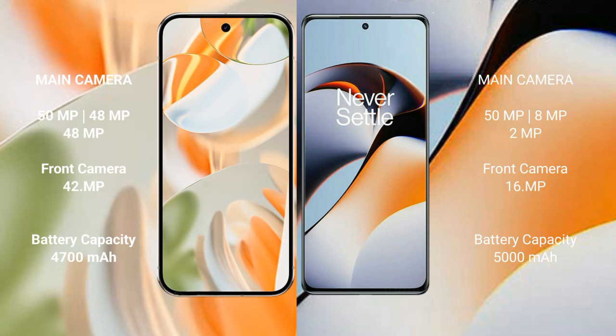The Google Pixel 9 Pro features a triple rear camera setup with 50MP, plus 48MP, plus 48MP sensors, and a 42MP front camera.